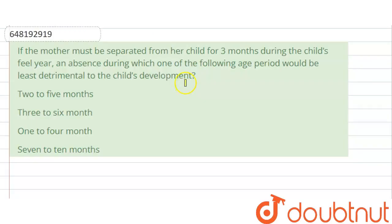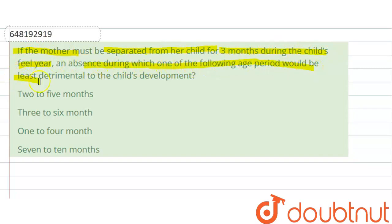Hello everyone. The question here is: if a mother must be separated from her child for 3 months during the child's early years, an absence during which one of the following age periods would be least detrimental to the child's development?